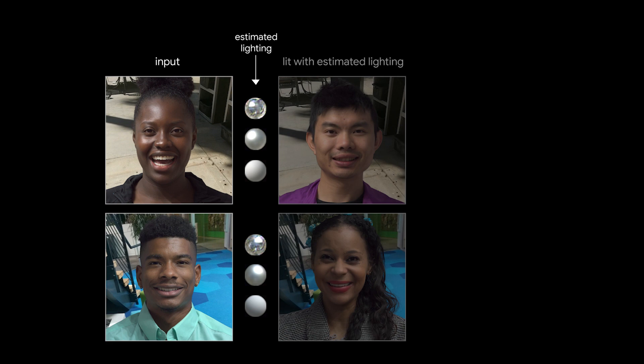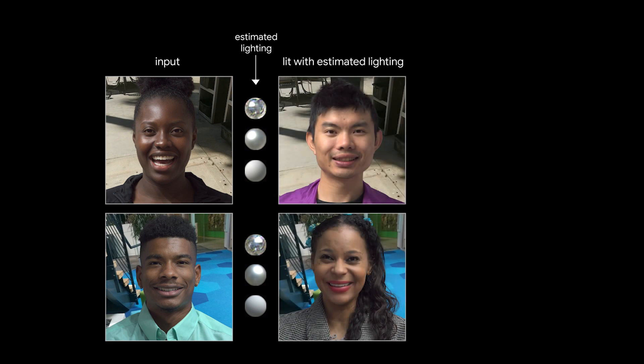Next, we show that our model recovers a similar scale of illumination across subjects, despite the inherent ambiguity between albedo and light source strength. Here we estimate the lighting off an input portrait, and then use the inferred lighting, as is, without an intensity scaling factor, to accurately light a subject of a completely different skin tone.